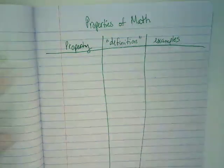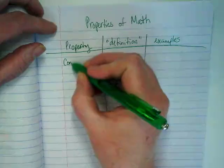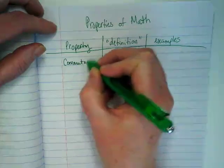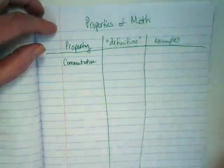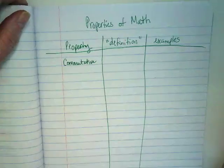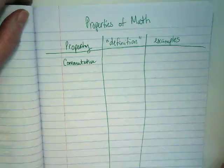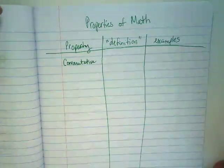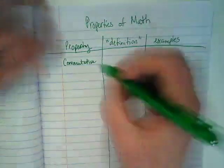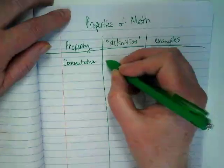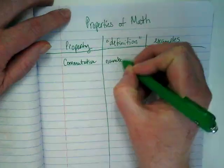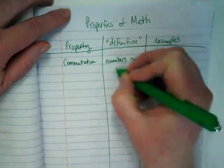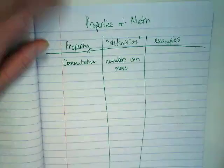We already learned one of these properties the other day. It's called commutative. What root word do you remember I said it was related to? Commuting. And what does commuting do for people? It helps us move around. This property moves numbers - numbers can move.